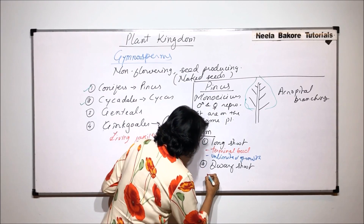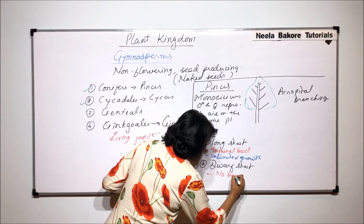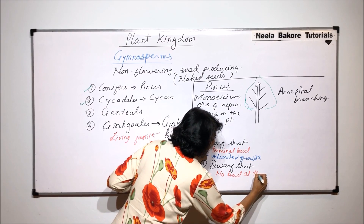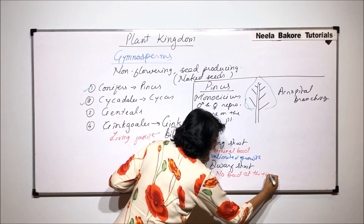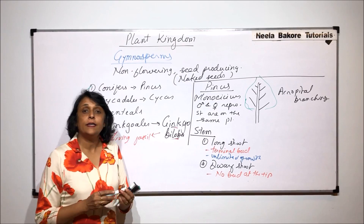In the case of the dwarf shoot, there is no bud at the tip, and because of this, it has limited growth.